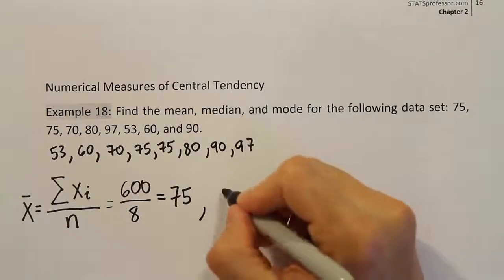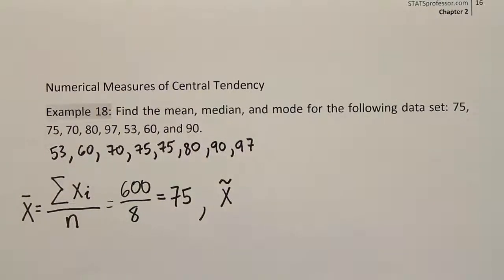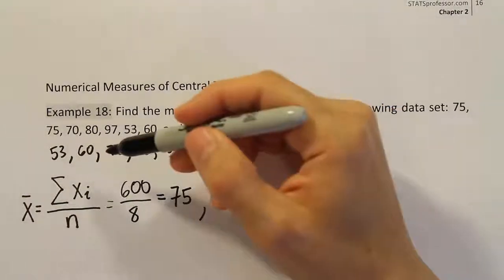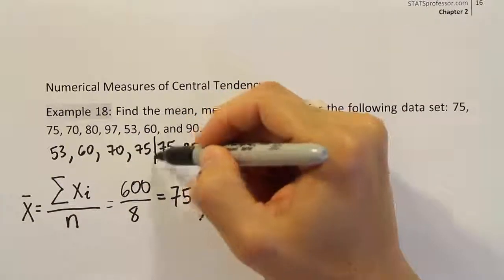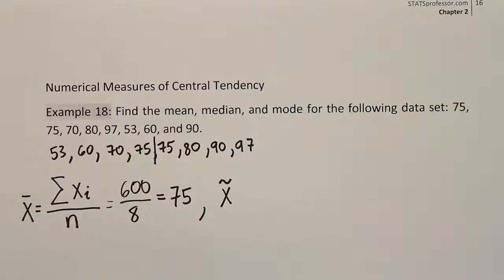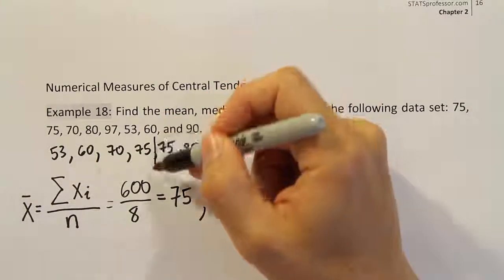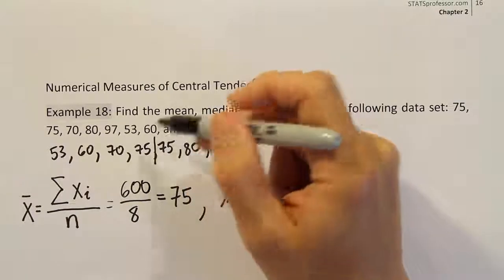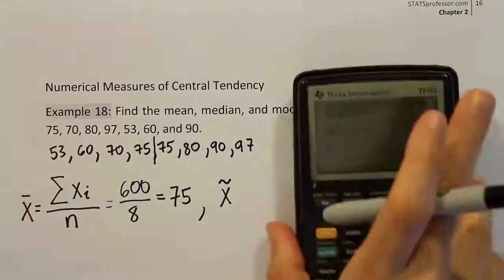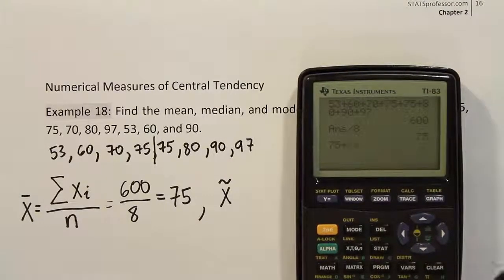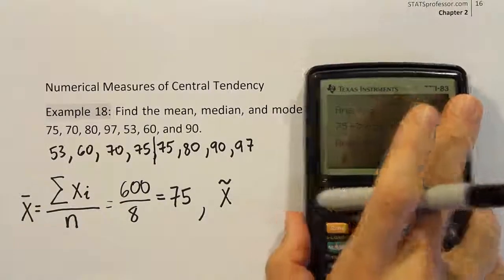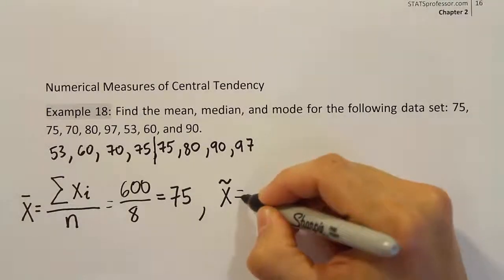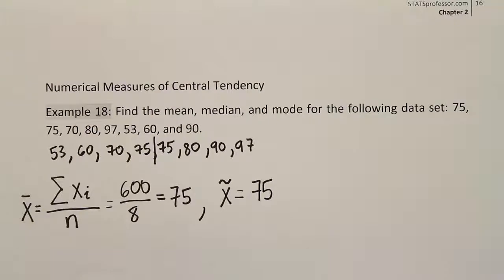Let's get the median next. The sample median has this symbol — it's x-tilde. To find it, I have to find the number right in the middle. Because those two values are in the middle, and normally we average the two middle values when there's an equal number of values on the left and right. Because it's an even number of values, we don't have a distinct number right in the middle — we have two numbers in the middle. So we take those two numbers and average them. You'd do 75 plus 75, which gives you 150, then divide by 2, and you get 75.